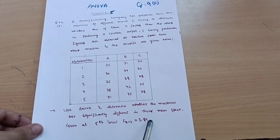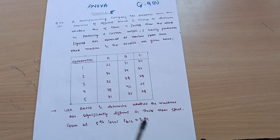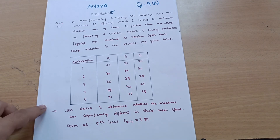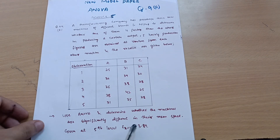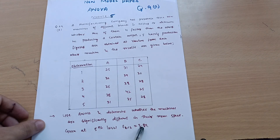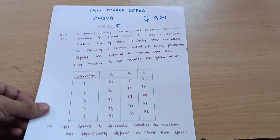In this question the five percent level of significance F-value is given directly. In previous problems we were supposed to calculate this F-value, but here it is given. We have to check: if our calculated F-value is less than 3.89 it is accepted; if it is greater than 3.89 the hypothesis will be rejected.